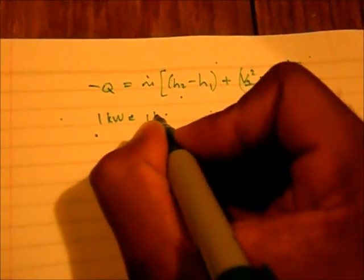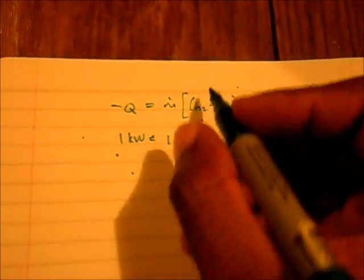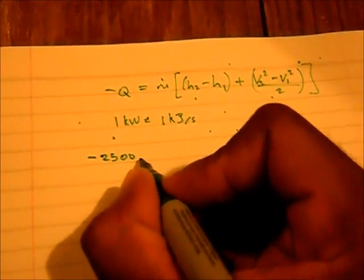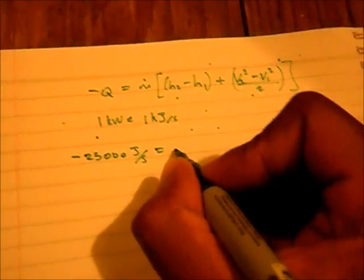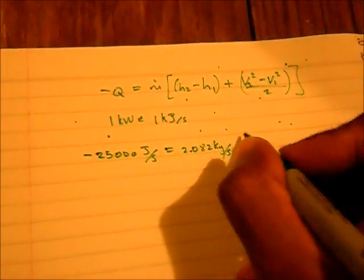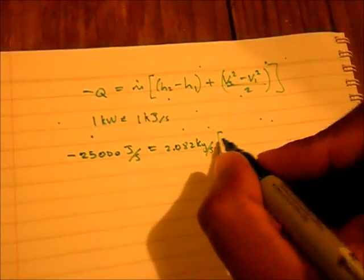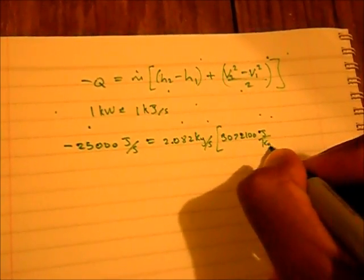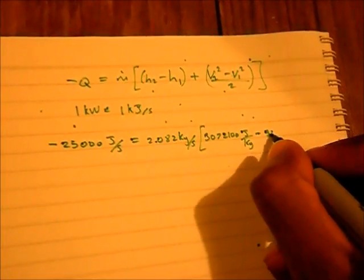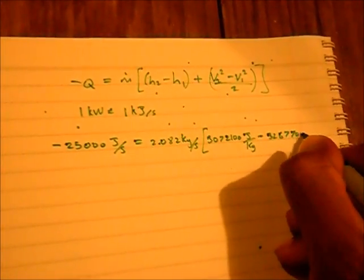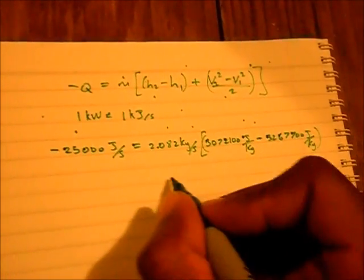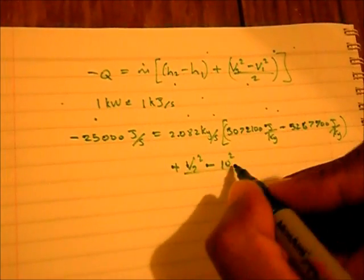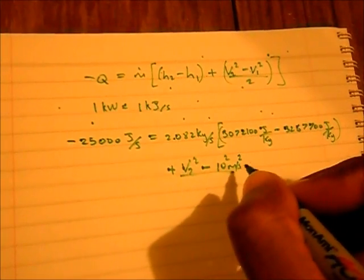1 kilowatt is equal to 1 kilojoule per second, so writing out the formula like this, we have minus 25,000 joules per second is equal to 2.082 kilograms per second times our values for h2 and h1, which are 3072100 joules per kilogram minus - oh I'm running out of space here - 3267700 joules per kilogram. And I'm just going to come down here, plus V2 squared minus 10 squared meters per second squared over 2.